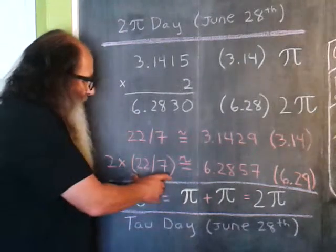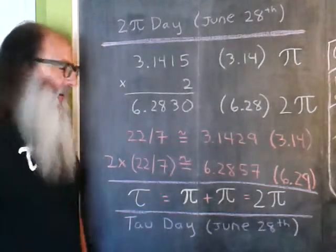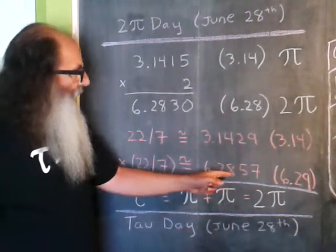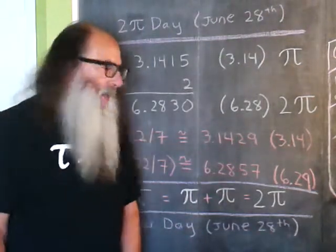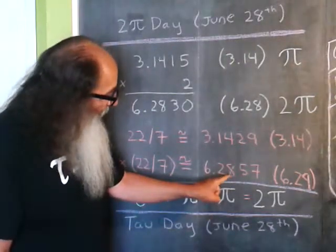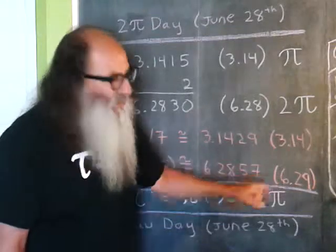If I take 22/7 and multiply it by 2, we get approximately 6.2857. If I round that to the nearest hundredth, we get 6.29.